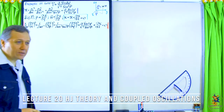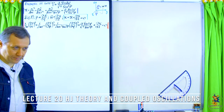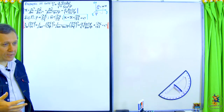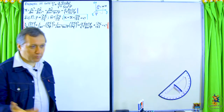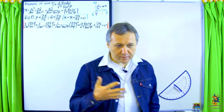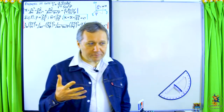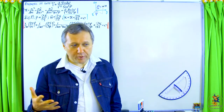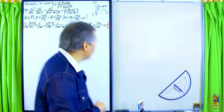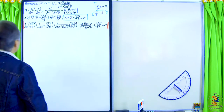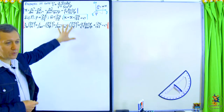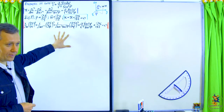Then we started discussing the second example, slightly more complicated because you have more variables, and the Hamilton-Jacobi equation is more complicated. We started looking at this and discussed all this at the end of the previous class.